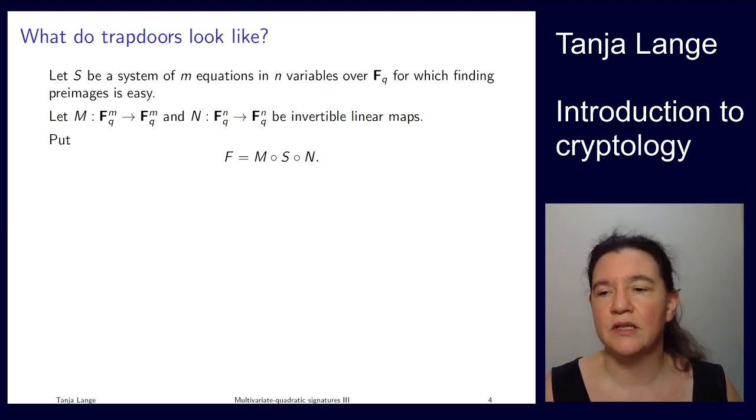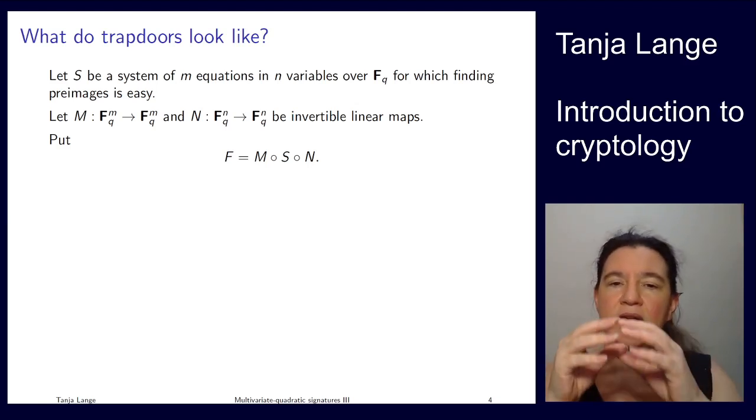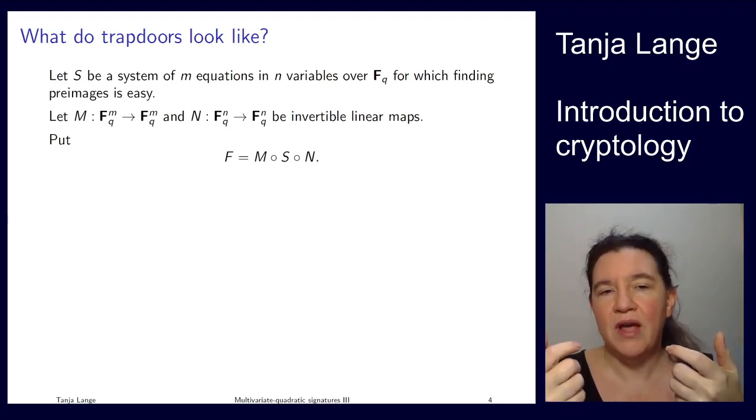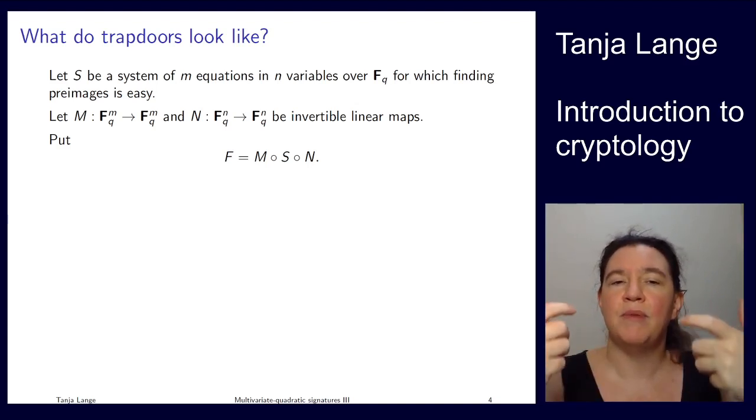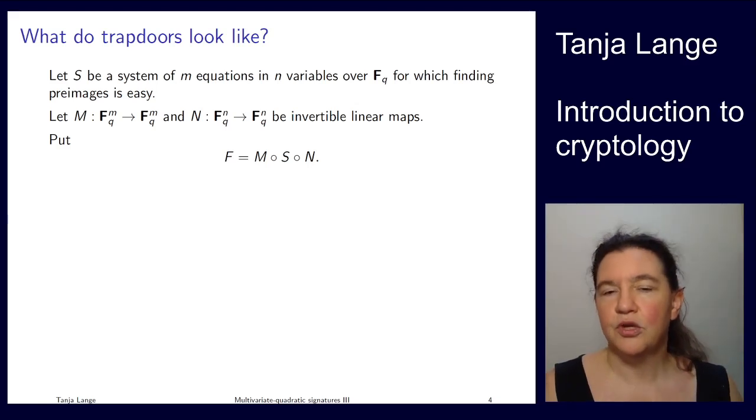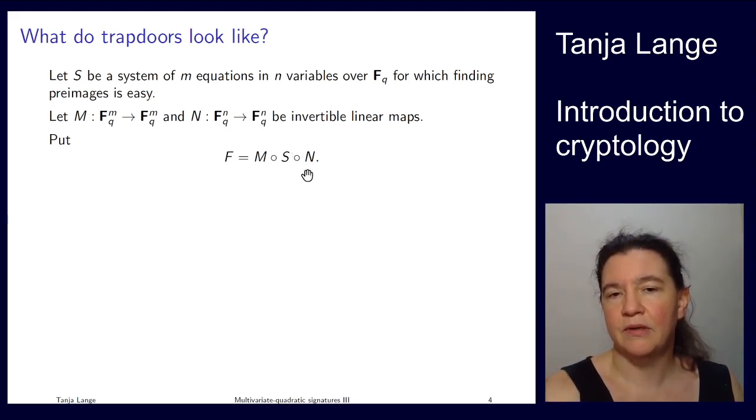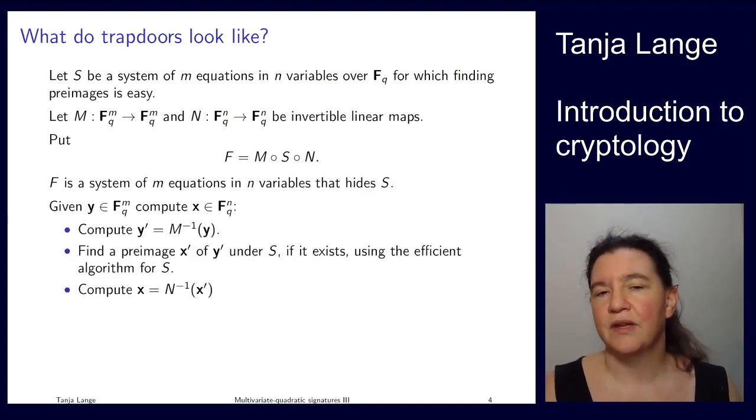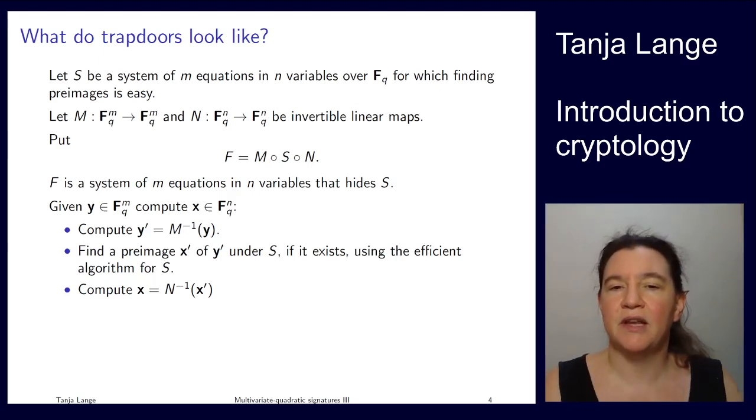Similar to how we did this in code-based crypto where we had a nice code which we were hiding with two matrices in the McEliece construction, we're now having this nice system s hidden by two linear invertible maps. We have n, which is an n-dimensional map over F_q, and we have an n×m matrix over F_q, and both of those are chosen to be invertible. Those kind of entangle the system—they hide the nice structure of s in f. If s was triangular but then all the variables change with some linear dependencies, the triangular structure will be gone.